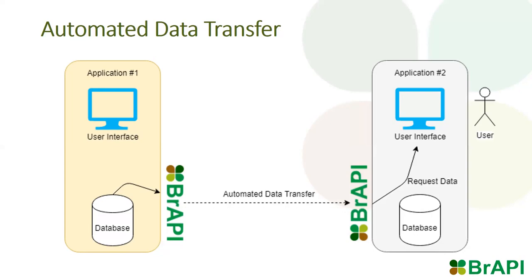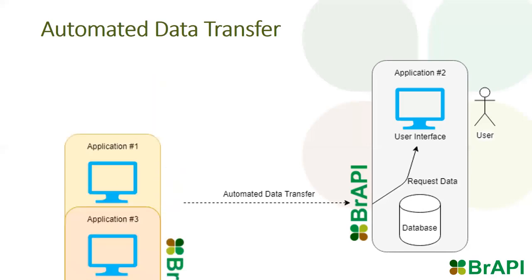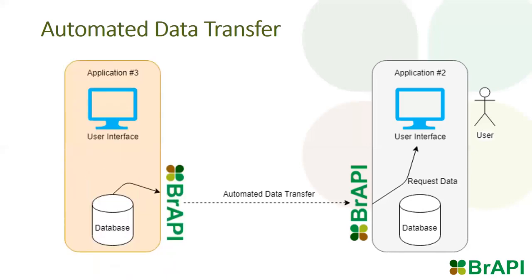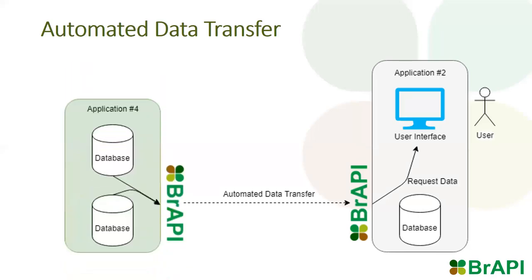BrAPI is a standard API specification for plant breeding data. BrAPI provides a common language that all breeding applications can speak when transferring information. This means we can easily share data between many types of applications to solve many different use cases. Having a common language also means we can share existing tools and computational resources within the community.